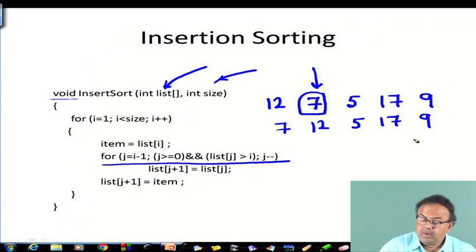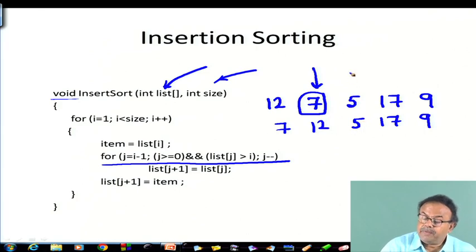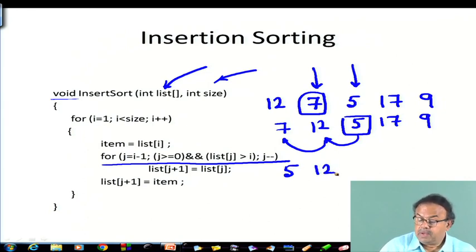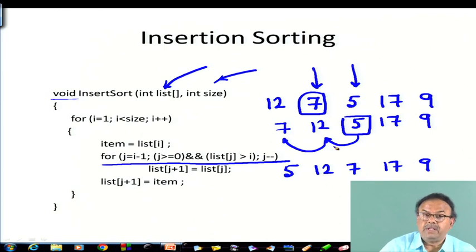Incrementing i to 2, we take element 5 and find its proper place by shifting. 5 will be swapped with 12 and then 7, giving 5, 7, 12, 17, 9. In that way we find the proper position for each element.